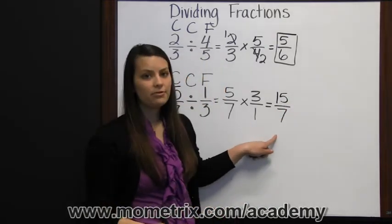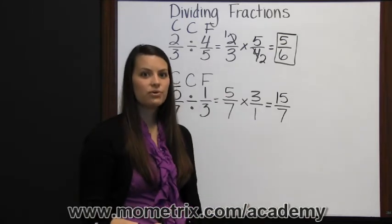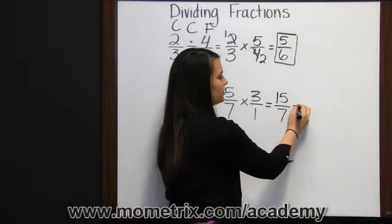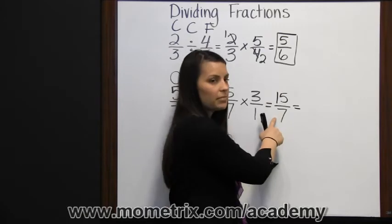This is an improper fraction, so to change it to a mixed number, we need to first divide fifteen by seven, which gives us two.